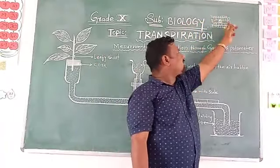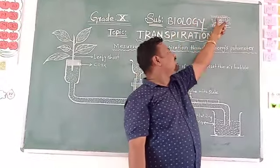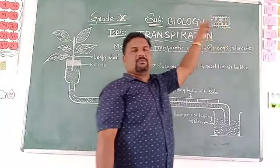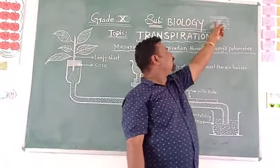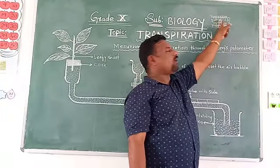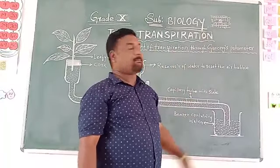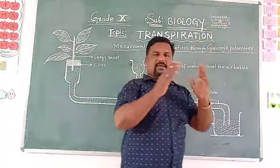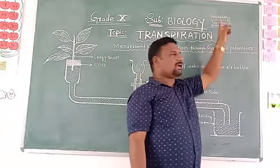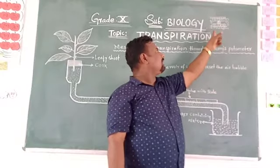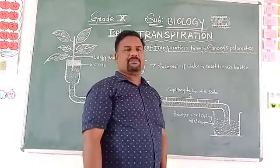Palisade parenchyma cells are arranged in a row and we don't find any intercellular space — no gap between cells. Whereas in spongy parenchyma there is much more space; spongy parenchyma is arranged leaving large air spaces. At the center you can see the vascular bundle. This shows the anatomy — the internal structure — of the leaf.